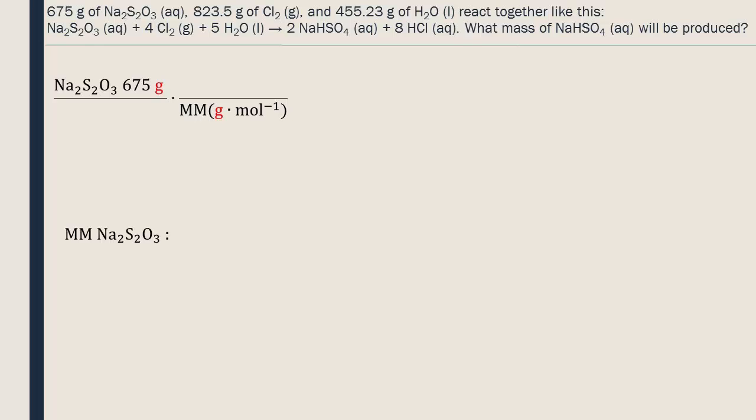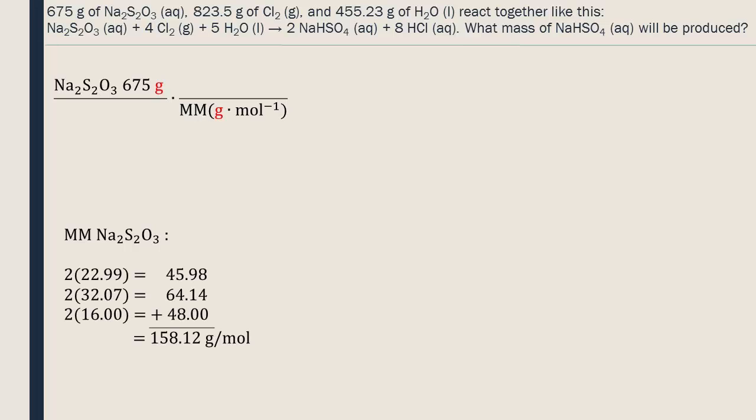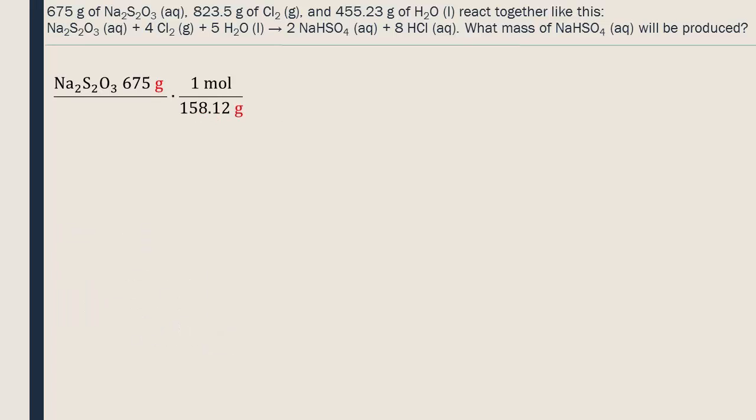We calculate the molar mass of Na2S2O3 by adding the molar masses of all the atoms within the molecule. The mass of each mole of this compound is 158.12 grams. The molar mass will be written as a fraction to show that the grams cancel and the final answer will be in moles. Now we need to find what quantity of NaHSO4 each reactant can produce, so we need to multiply them by their stoichiometric coefficients so they become stoichiometrically equivalent, and our answer is in moles of NaHSO4.